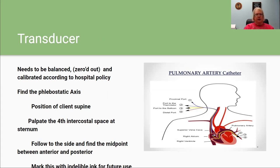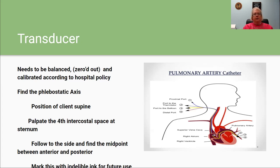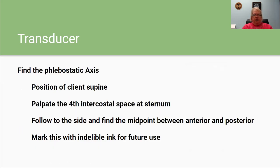The phlebostatic axis: position the patient supine, flat on their back. Palpate the fourth intercostal space at the sternum, follow that around to the side, and find the midpoint between the anterior and posterior thoracic wall. Mark that spot on the skin with indelible ink so you know where to reference it each time.